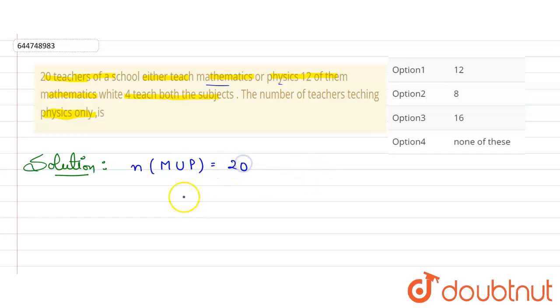It is given that 12 of them teach mathematics, so number of teachers of mathematics will be 12. And 4 teach both, both means intersection, so M intersection P is equivalent to 4. We need to find the number of teachers teaching physics only. Physics only, not physics - physics only, both are different.